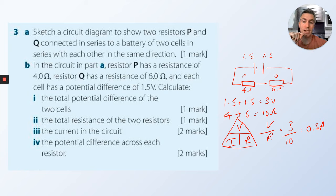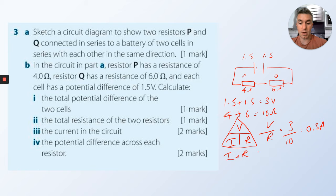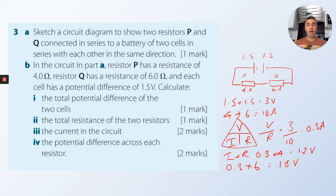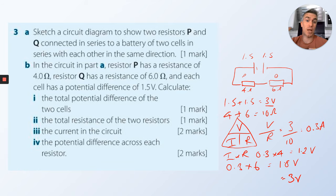The rule for current in a series circuit is that the current is the same everywhere. For resistor P, V = I × R, so 0.3 times 4 equals 1.2 volts. For Q, 0.3 times 6 equals 1.8 volts. Adding 1.2 and 1.8 gives 3 volts — the same as the battery. That's a little check. Well done.